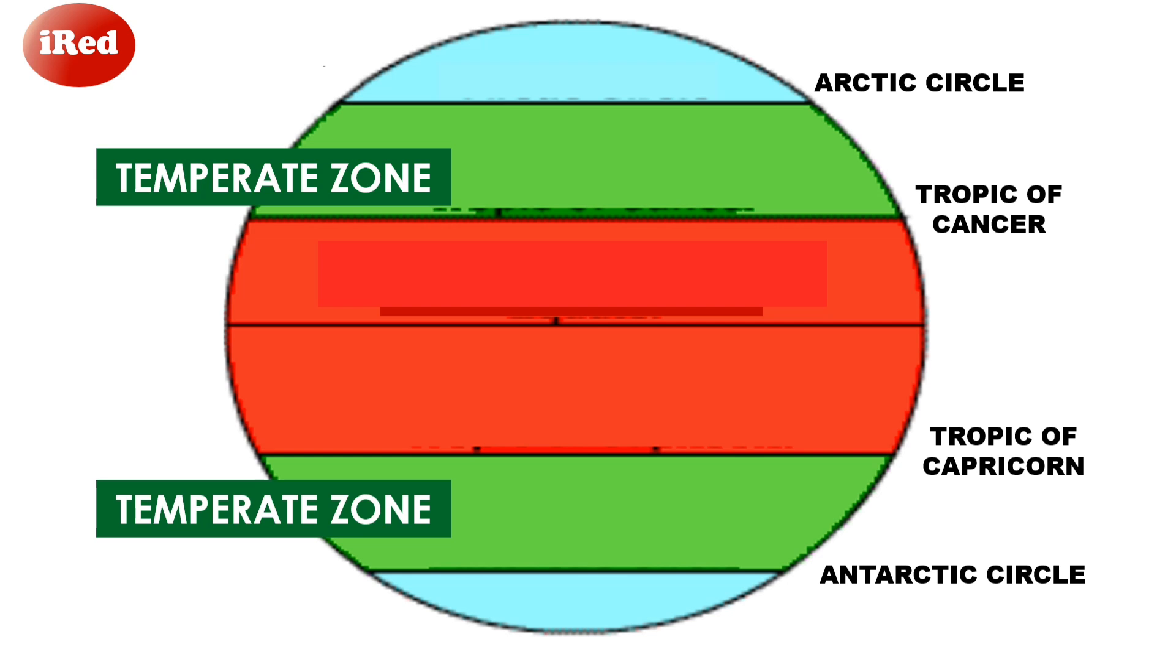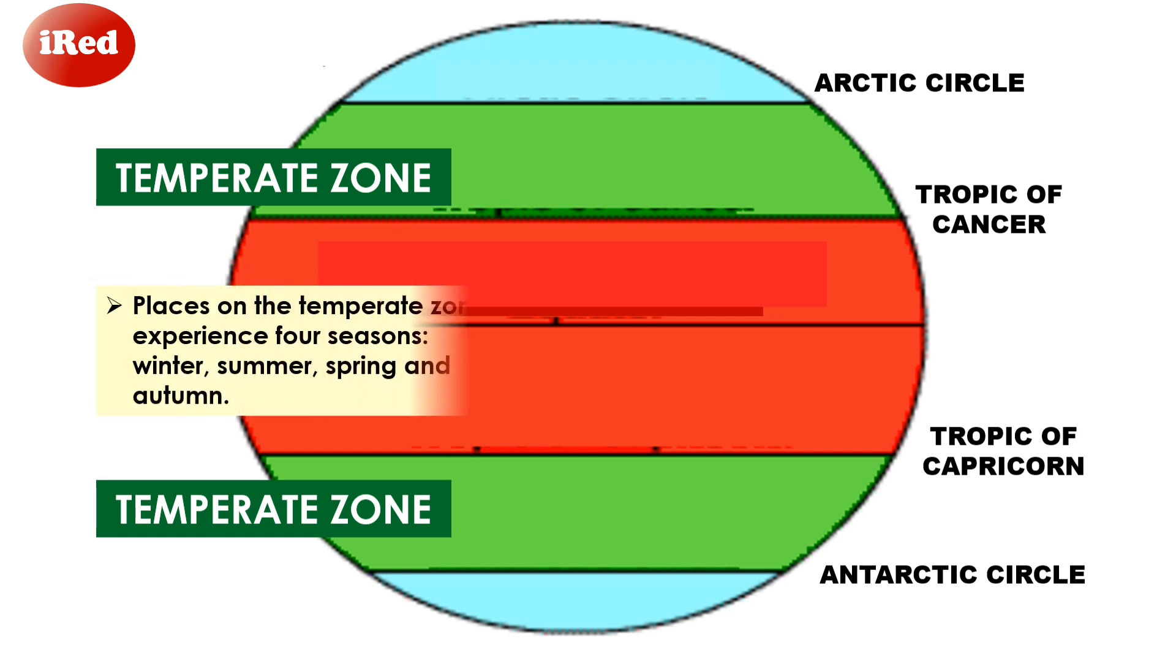Next are the temperate zones, which are located between the Tropic and the Arctic on the north, and the Antarctic on the south. Temperate zones are relatively colder than the Tropic zones. Places on this zone experience four seasons: winter, summer, spring, and autumn.